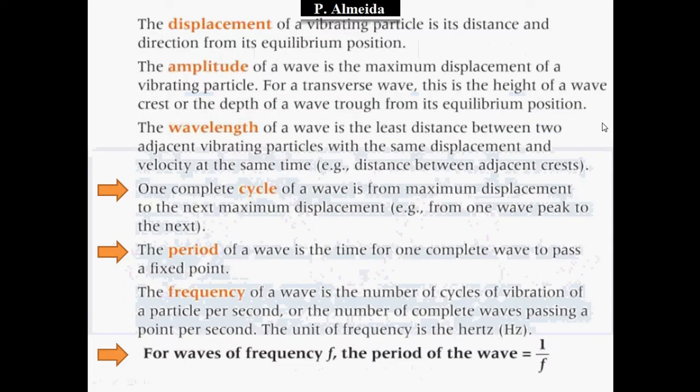So how does the stuff you know from GCSE compare to what you need to know at A-level? I've marked the new ones with an arrow. The displacement of a particle — any particle vibrating in a wave — is the distance and the direction from the equilibrium position.